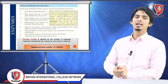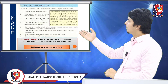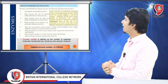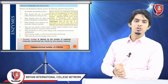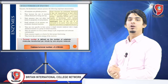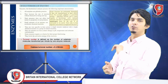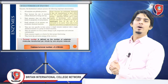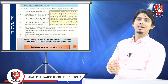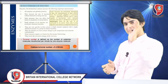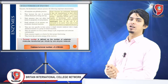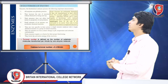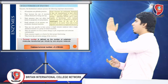Enzyme turn-over number: highlighted in orange on the slide is an important example. The enzyme catalase, which is involved in breaking down hydrogen peroxide, can convert 6 × 10⁶ substrate molecules per minute into products. This is a very important short question topic.